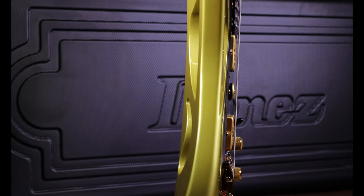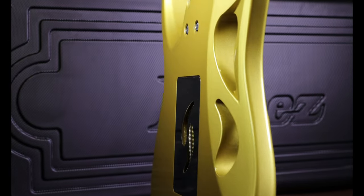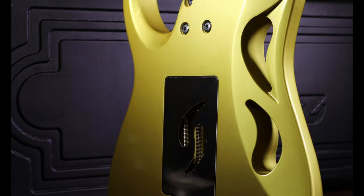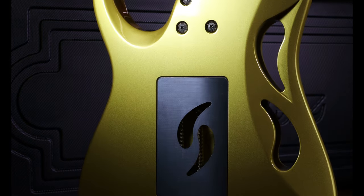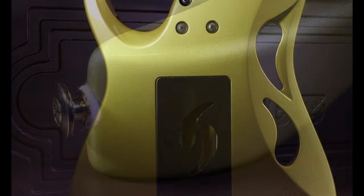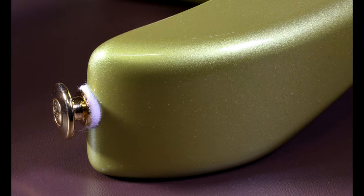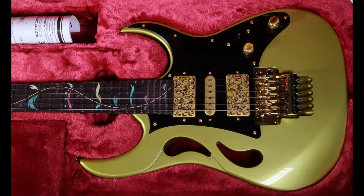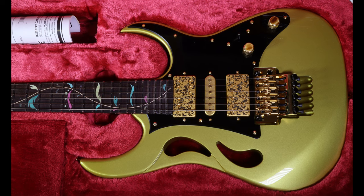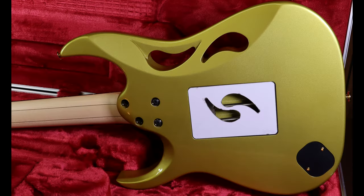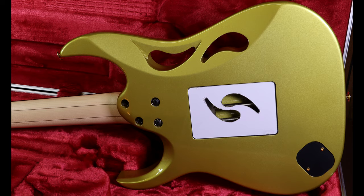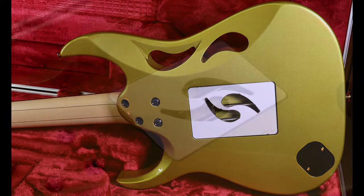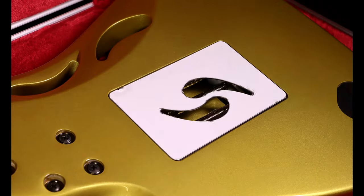These changes are so subtle it's quite hard to show them in a photograph or video, but I noticed the place where you could notice the differences most clearly was on the cutaway horn. So if you look at this with the Jem and the Pia you can see just how different they really are. The edges on the Pia are rounded whereas on the Jem they were sharp.